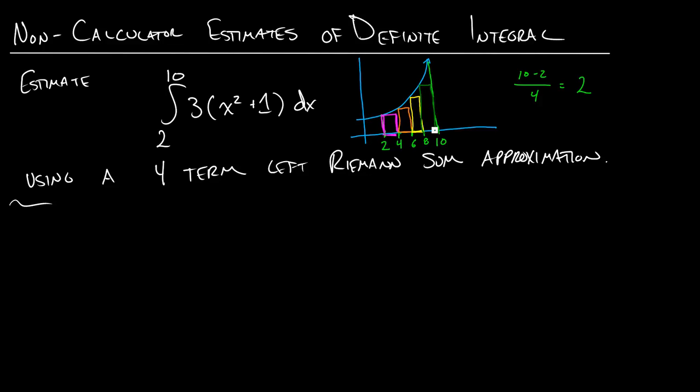So you can kind of see that we're going to be underestimating our definite integral. We want to get the area, but we're missing some spots. But to use this four-term Riemann sum approximation, we've just got to get the area of each of these four rectangles. So we really want A1 plus A2 plus A3 plus A4. And so for each of these, we're just going to use the formula that we know and love: base times height.